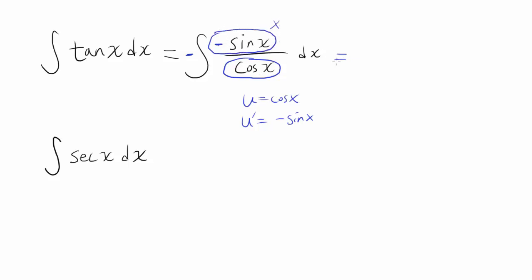And you have 1 over u du, which is the same thing as natural log of absolute value of u, also known as cosine of x, plus c.